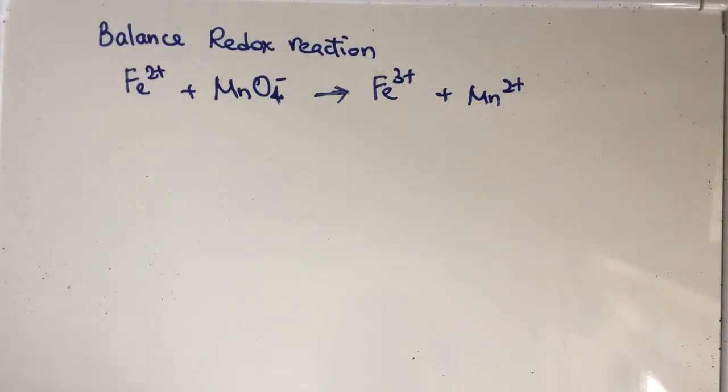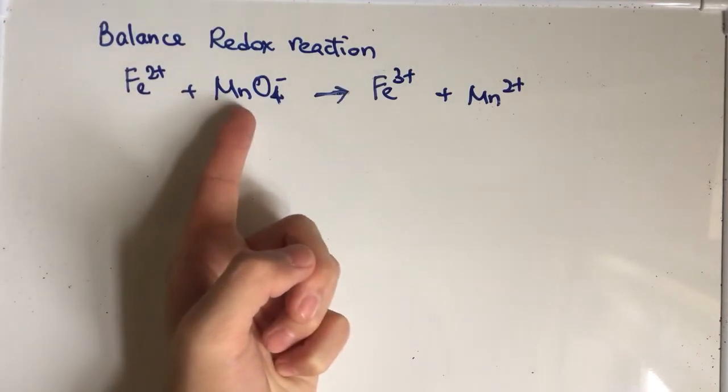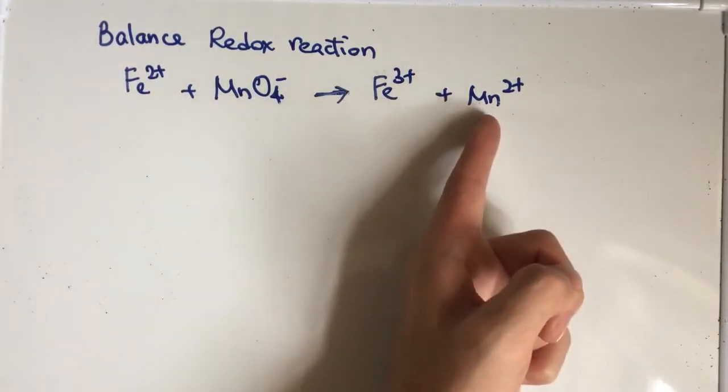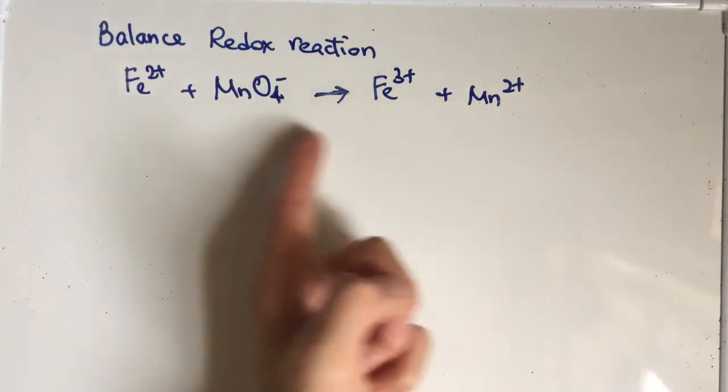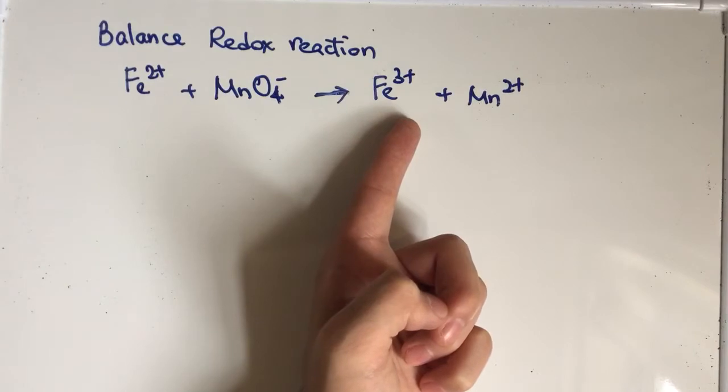In this video, I'm going to show you how to balance redox reactions, and here is an example. When iron 2 plus reacts with permanganate ion, it will become Fe3+ and manganese ion. So this is the reactant and the product, but how can we balance the reaction?